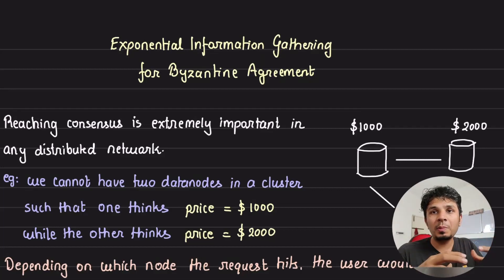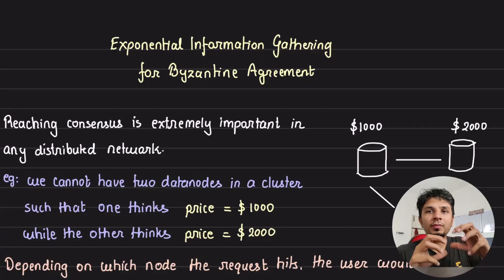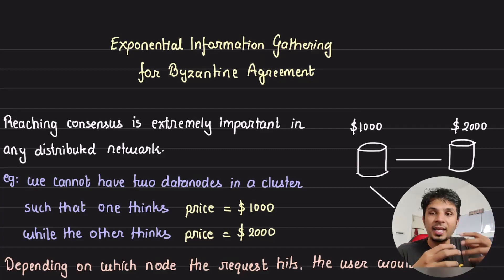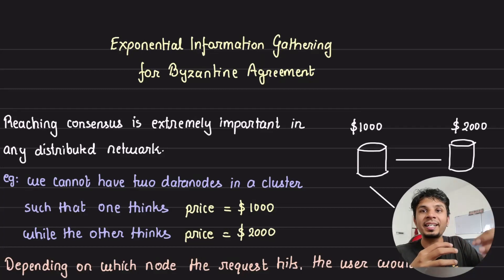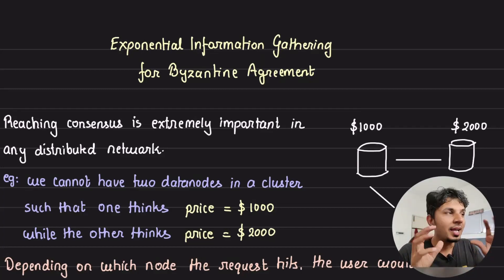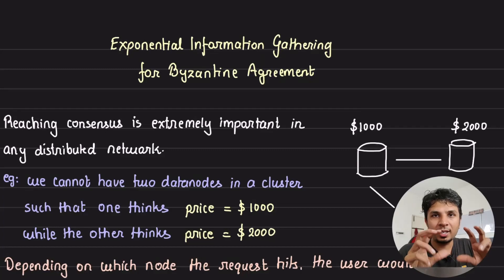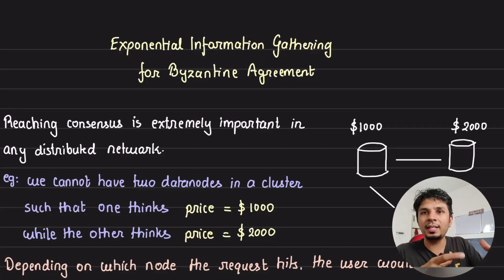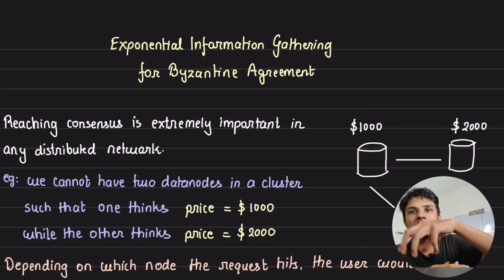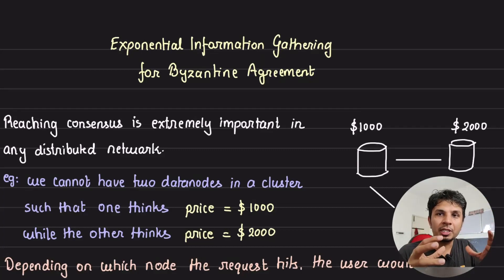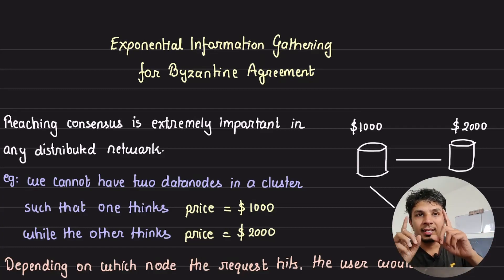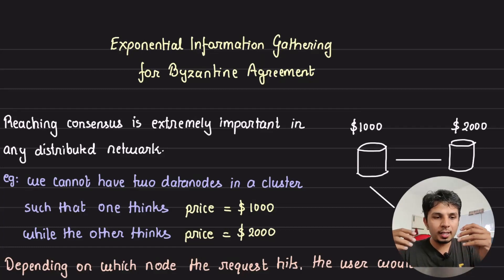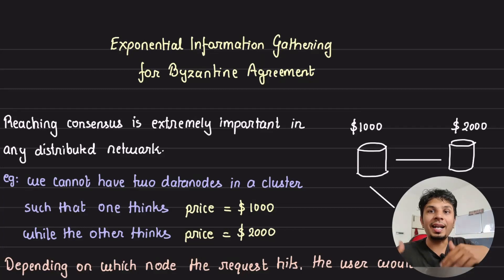Byzantine agreement is an important problem to address in a distributed network. It is all about being tolerant of nodes that are malicious in nature, which means they are corrupt and are trying to ruin the sanity, integrity, and correctness of the network. In this video, we talk about an algorithm that gathers an exponential amount of information to build a robust understanding of different values proposed by different nodes. Once we have this information, we reach a consensus such that even if there are a few malicious nodes who send random values to us, we would still be reaching the correct consensus.